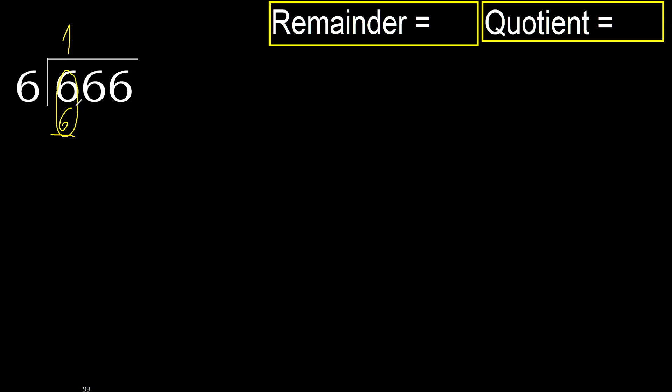Subtract: 6 minus 6 equals 0. Next, bring down the next digit — eliminate the 0 here. Ok, bring down 6.